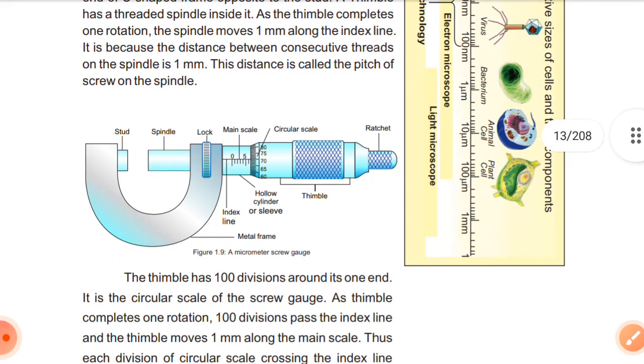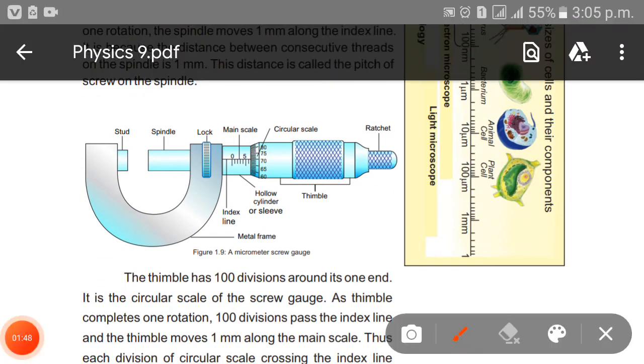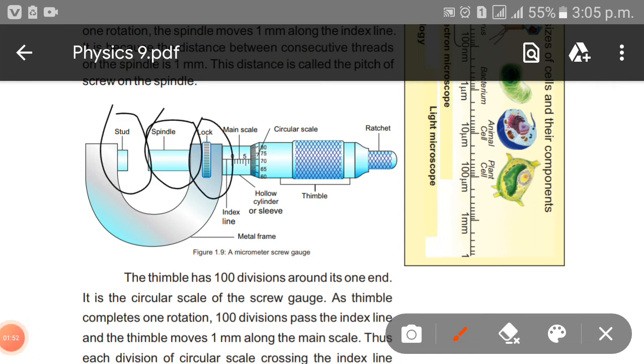So here, you can see the diagram. This is the stud, this is the spindle, this is your lock, this is your main scale, this is a circular scale, this is a ratchet, and this index line is shown here. Then you have hollow cylinder sleeve and then you have thimble. It is clear.